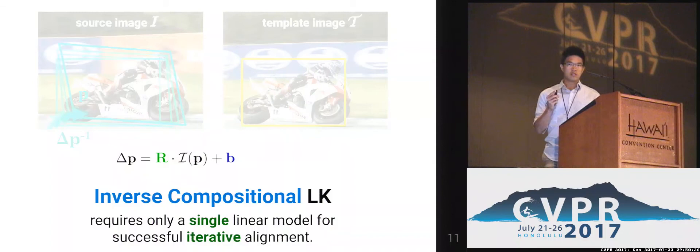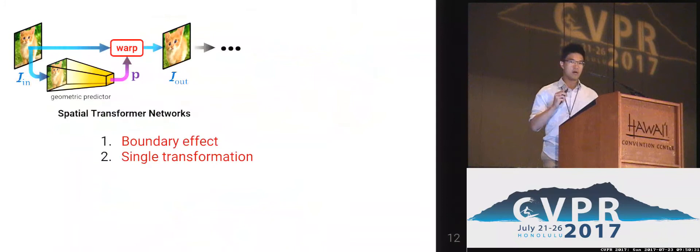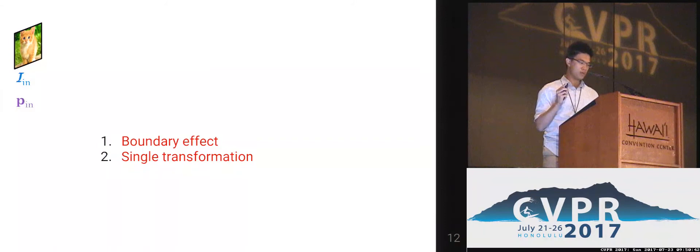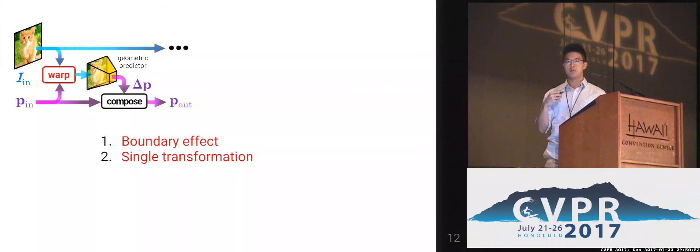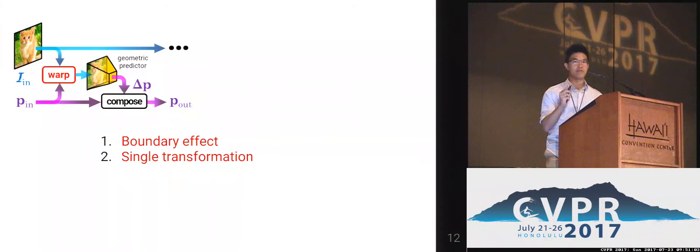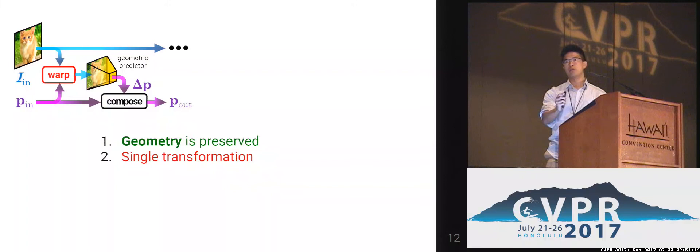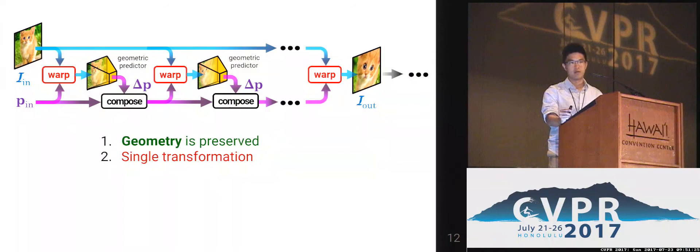So how can we use this concept to help Spatial Transformer Networks? Given an initial estimate of the warp p_n, we can warp the image and feed it into the geometric predictor to predict a warp update. We compose the warp parameters together, and then pass it down to the subsequent network. We can see that the original image is always preserved — it is never destroyed — and the geometry is always preserved. By that, we eliminate the boundary effect. We can also see that this kind of module is concatenable, meaning we can stack this module multiple times to form an iterative alignment framework, with a very high analogy to the Lucas-Kanade algorithm.